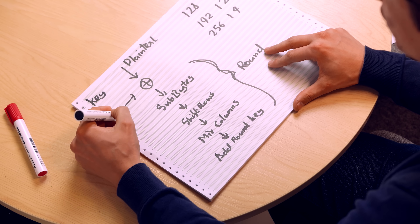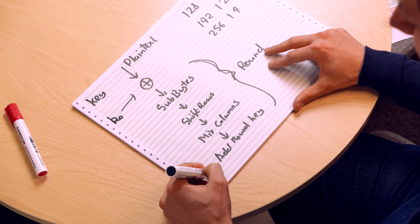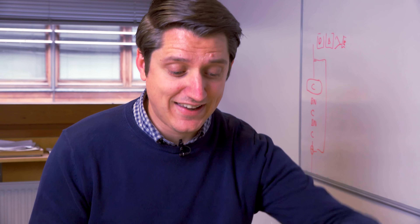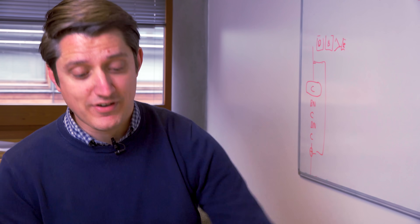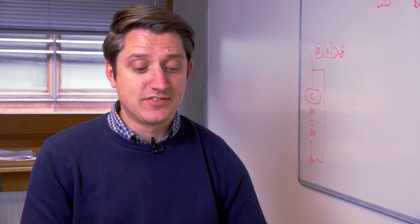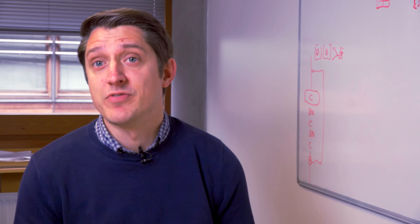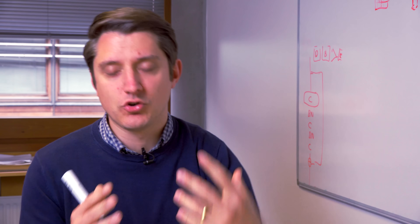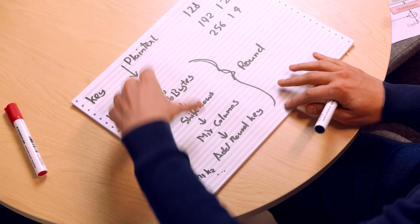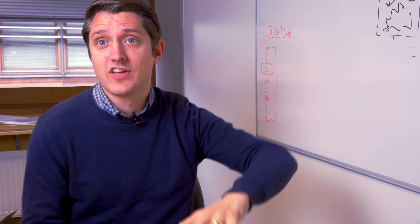What we do is take the original key and expand it using something called a key schedule into different round keys. So this would be key 0, key 1, key 2, and so on depending on which round we're in — there'll be a key expanded for every round. We won't talk in too much detail about the key schedule; it's quite simple and mainly just meant to be fast. It takes your shorter key and expands it sufficiently so you can put it in at these different rounds.